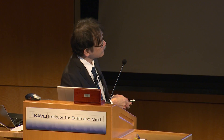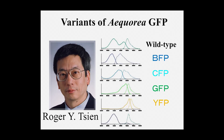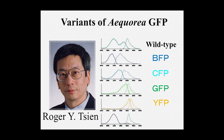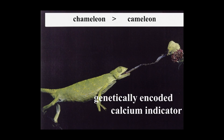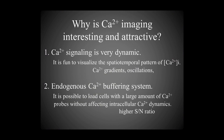Mutagenesis studies done by Dr. Roger Tsien produced quite a few color variants that were more useful and brighter. I stayed in Roger's lab from 1995 to 1998, and I used CFP and YFP as the donor and acceptor for FRET, to create a genetically encoded indicator for calcium ions.